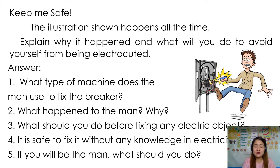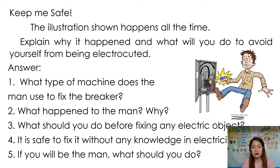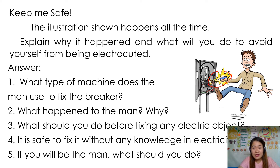Here we have an illustration. The illustration shows something that happens. We need to explain why it happened and what you would do to avoid being electrocuted. First question: what type of machine does the man use to fix the breaker? The man is using a screwdriver. A screwdriver is an example of a wheel and axle, and it can also be an example of a lever.